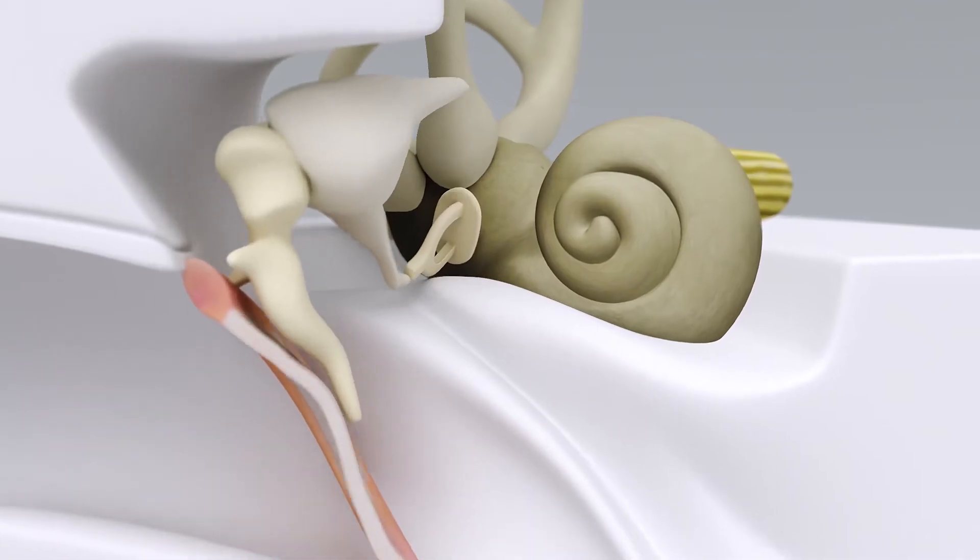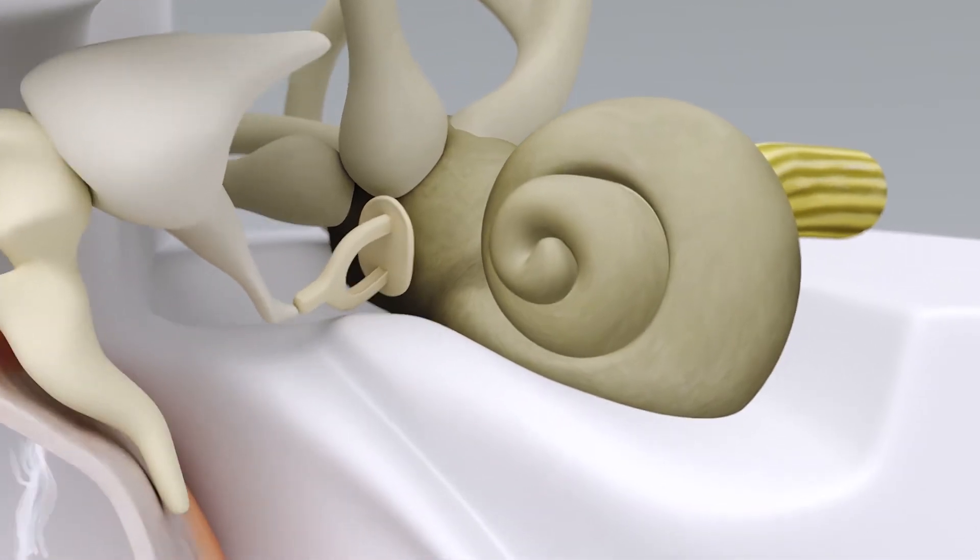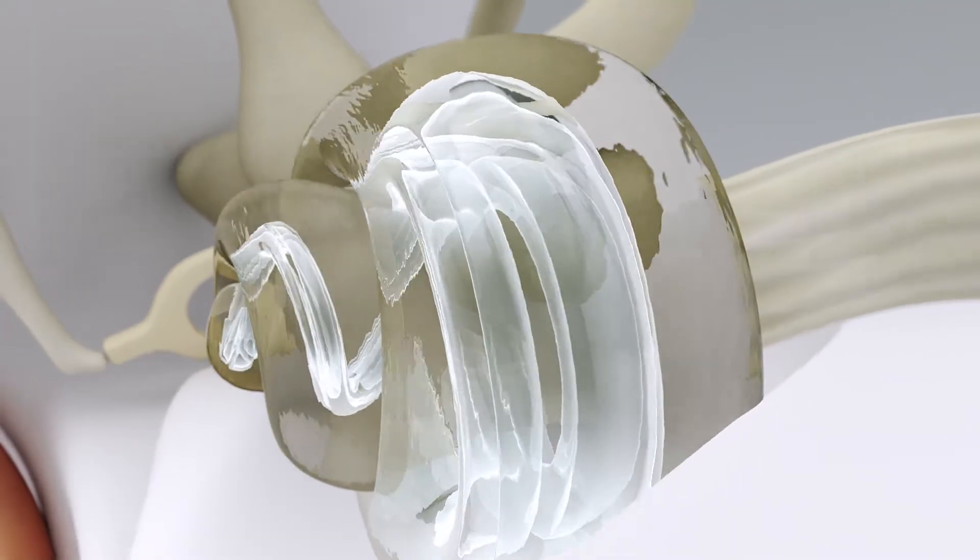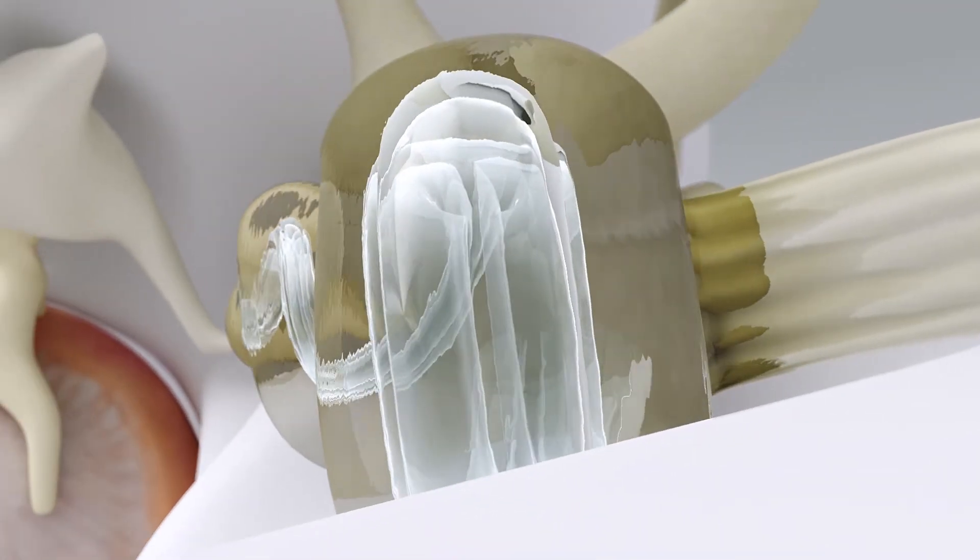In the inner ear is the cochlea, which is similar in shape to a snail shell. It contains several membranous sections, which are filled with watery fluids.